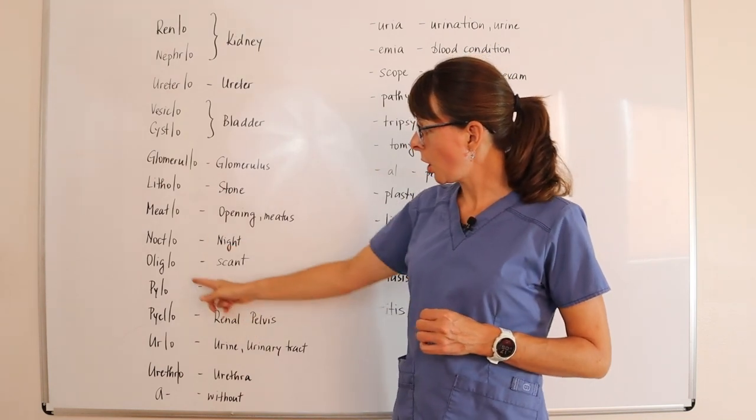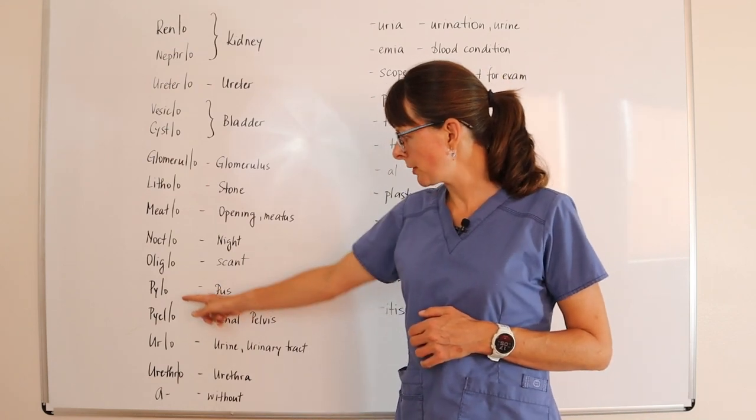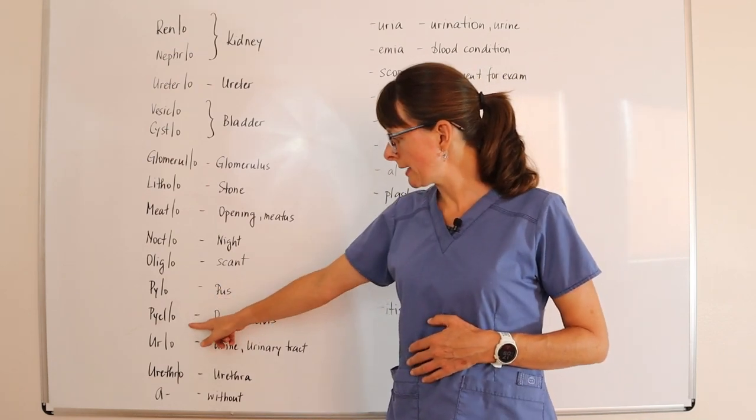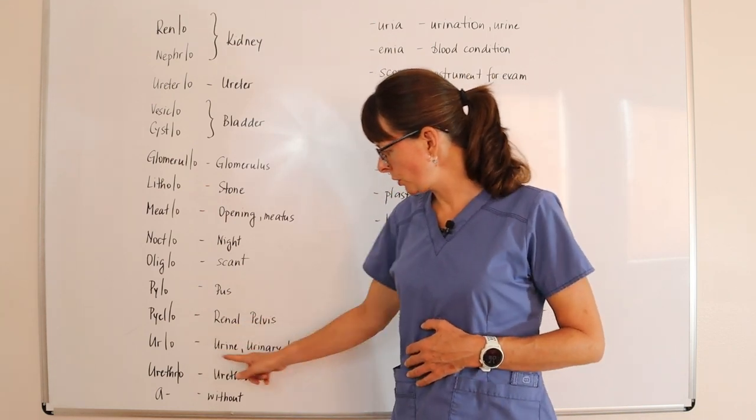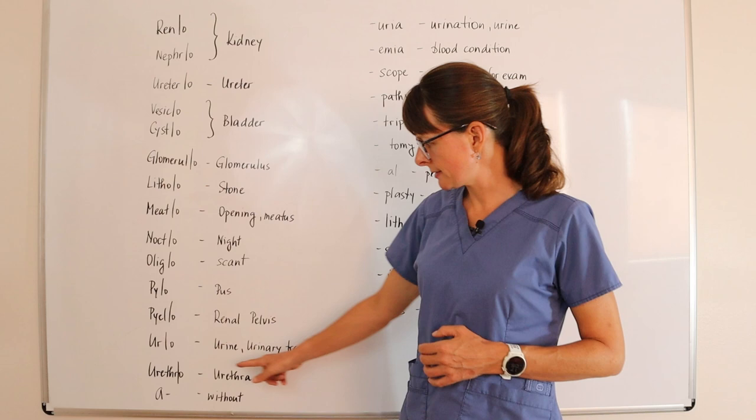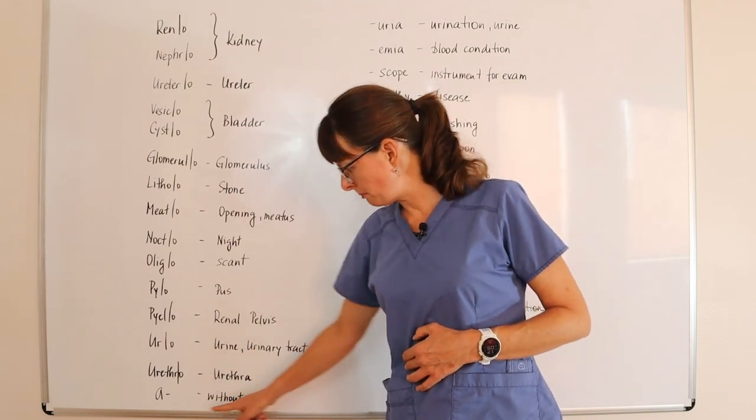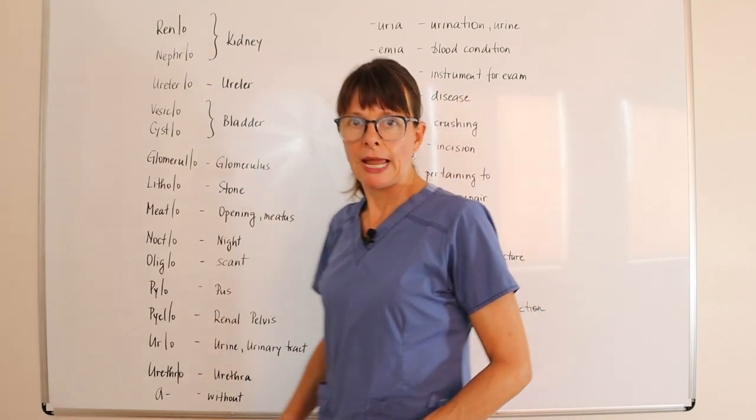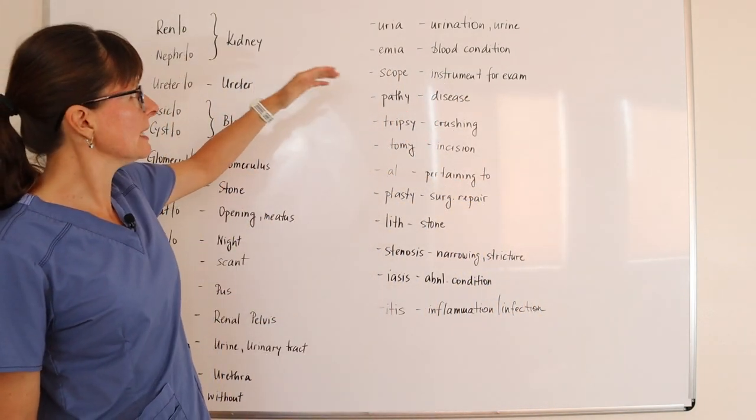Nocto is night, oligo is scant, pyo means pus, pyelo refers to the renal pelvis, uro to urine or urinary tract, urethro to the urethra, and a- means without. And then for our endings of the word,